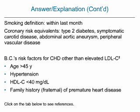BC does not have a coronary risk equivalent because he does not have a history of type 2 diabetes, symptomatic carotid artery disease, an abdominal aortic aneurysm, or peripheral vascular disease. BC's coronary risk is increased and likely underestimated by the Framingham risk score because of the presence of multiple major CHD risk factors other than elevated LDL cholesterol. Specifically, he is older than 45 years of age, he has hypertension, his HDL cholesterol is less than 40 mg/dL, and he has a family history of premature coronary heart disease.